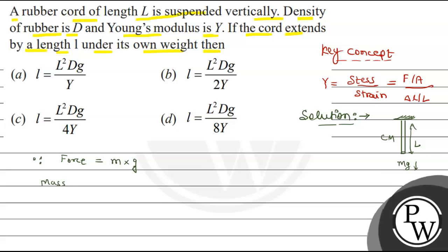Mass equals volume into density. The volume of the rod is A into L, where cross-sectional area is A and length is L. Density is capital D as given in the question. Force becomes A L D into G.